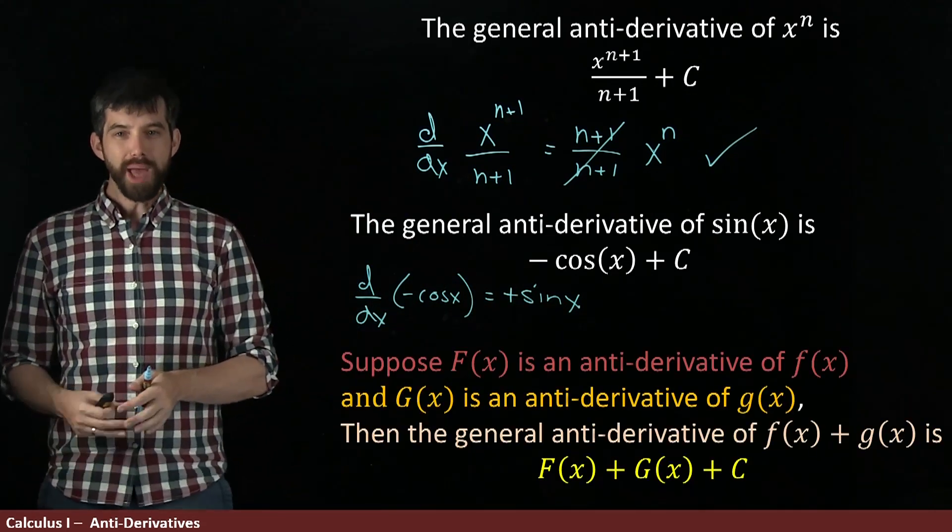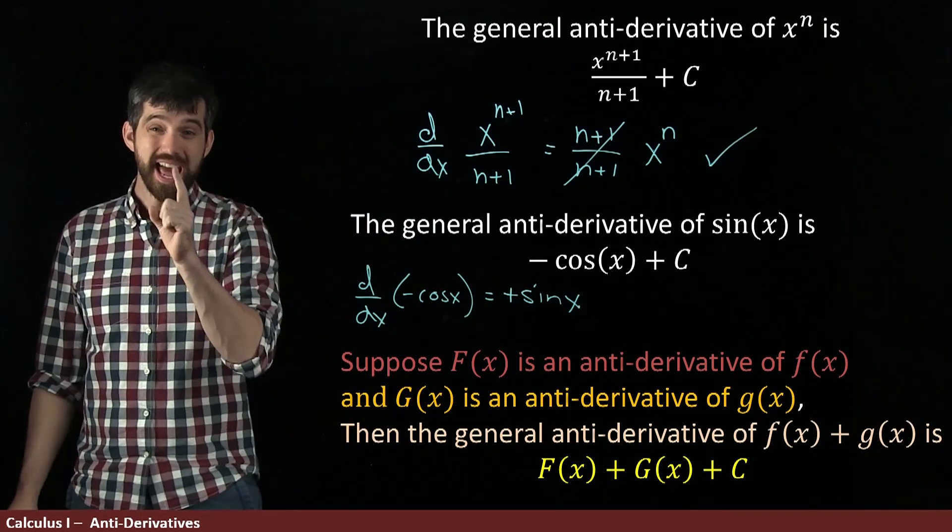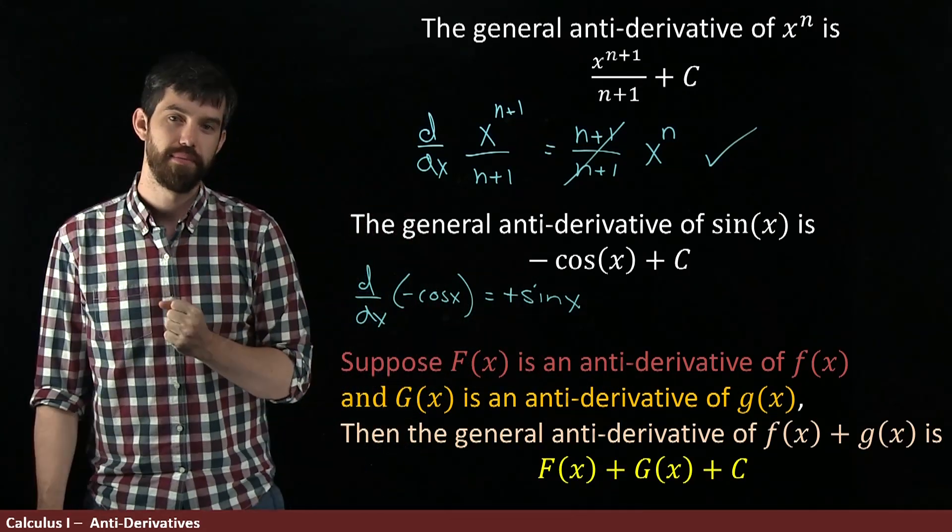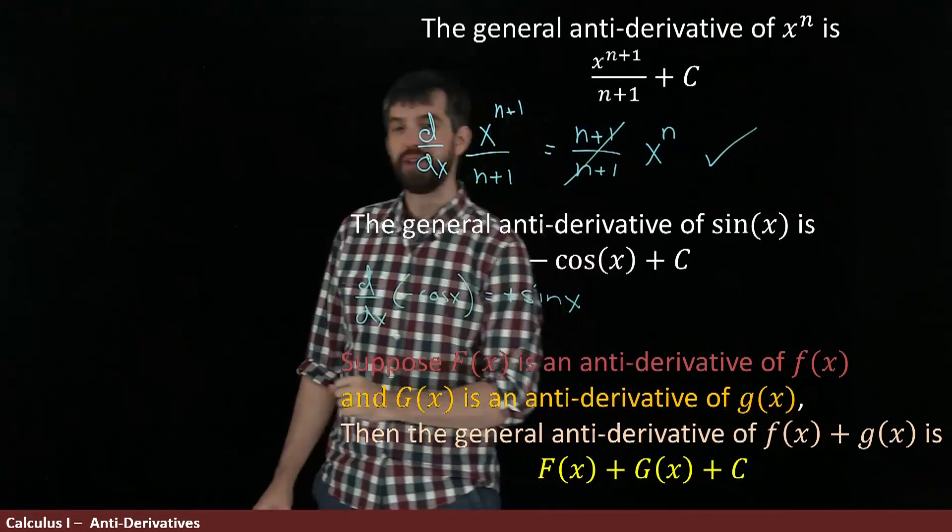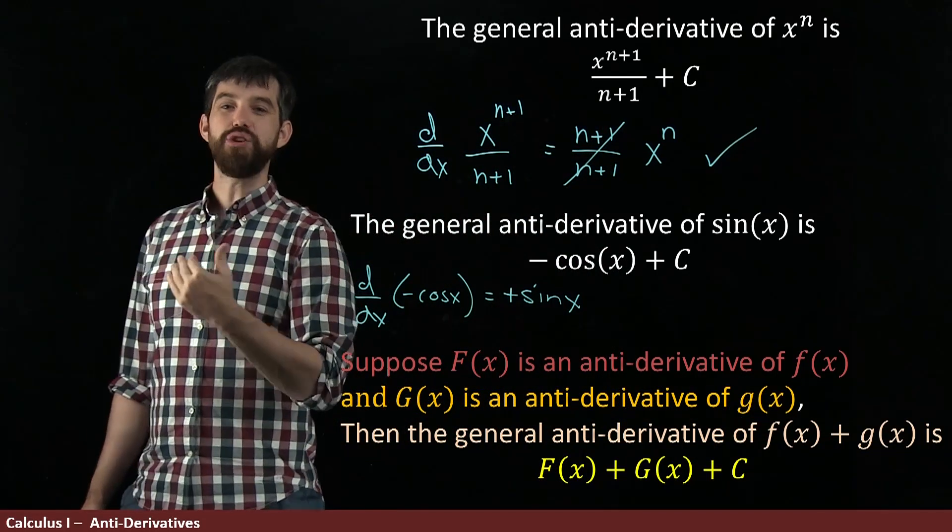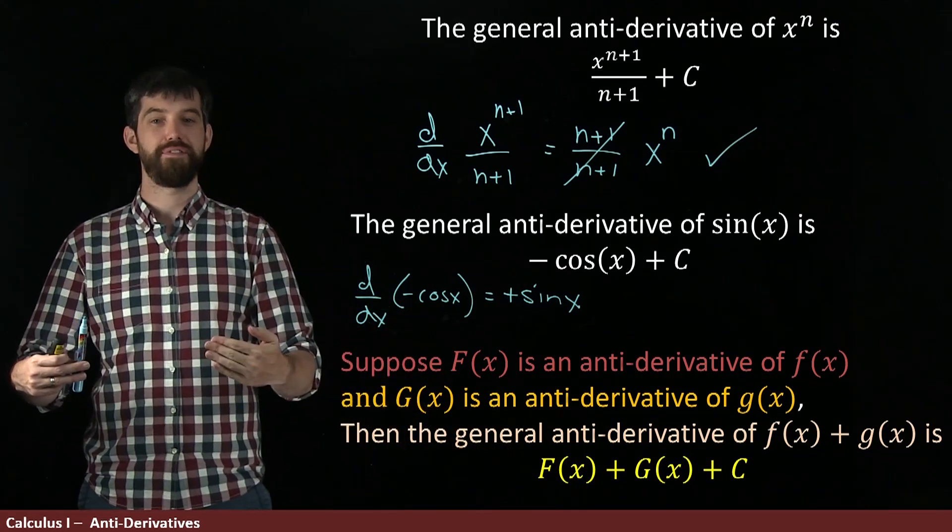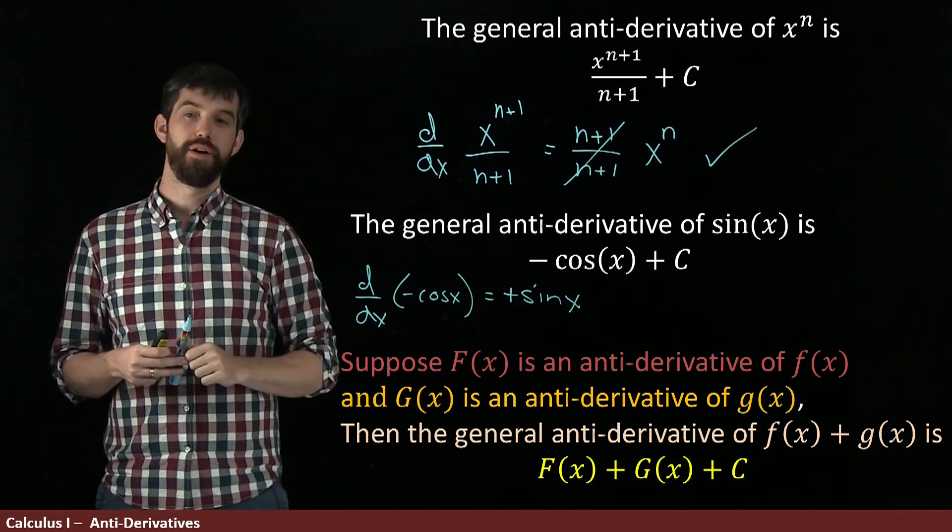So how might this work? So what I'm going to suppose is that I've got a big F, which is an antiderivative of little f. And I have a big G, which is an antiderivative of little g. Then my claim is that if I want an antiderivative of the sum down here, that the antiderivative to the sum is the sum of these two different antiderivatives, the capital F plus the capital G, plus that c if I'm doing the general form.